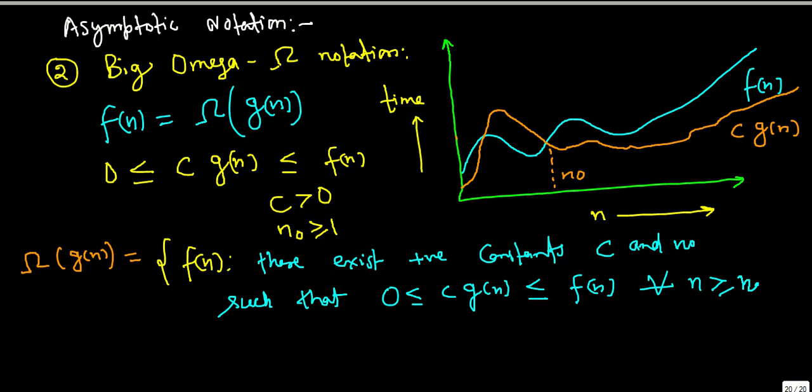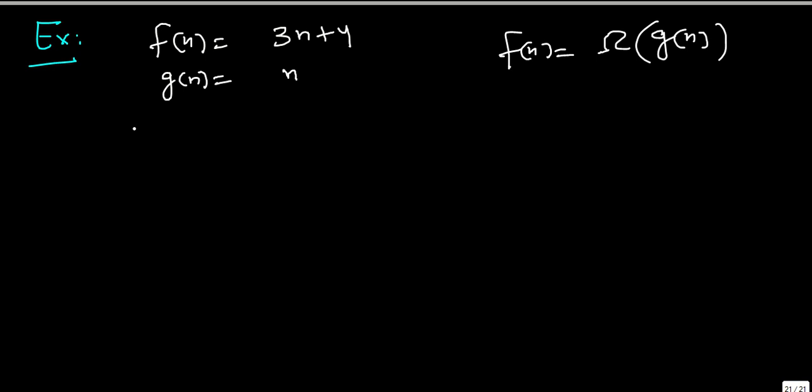We will consider an example to understand this notation. Let us take an example where F(n) equals 3n plus 4 and G(n) equals n. Can we say that F(n) equals Omega of G(n)?